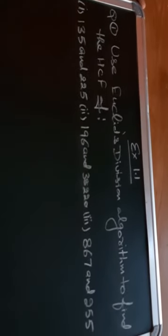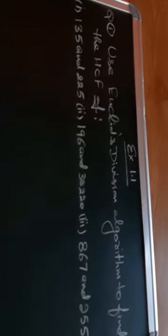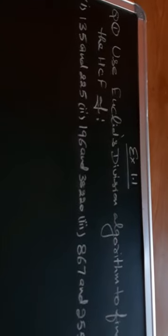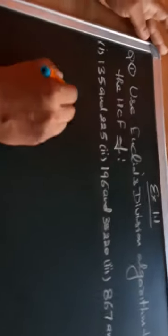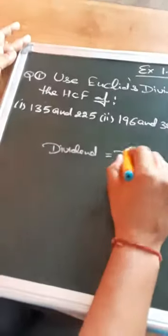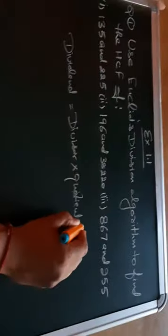So we'll start with the first part, how to find the HCF using Euclid's division algorithm. First of all, we must know what is Euclid's division algorithm. Euclid's division algorithm is that dividend is equal to divisor into quotient plus remainder.